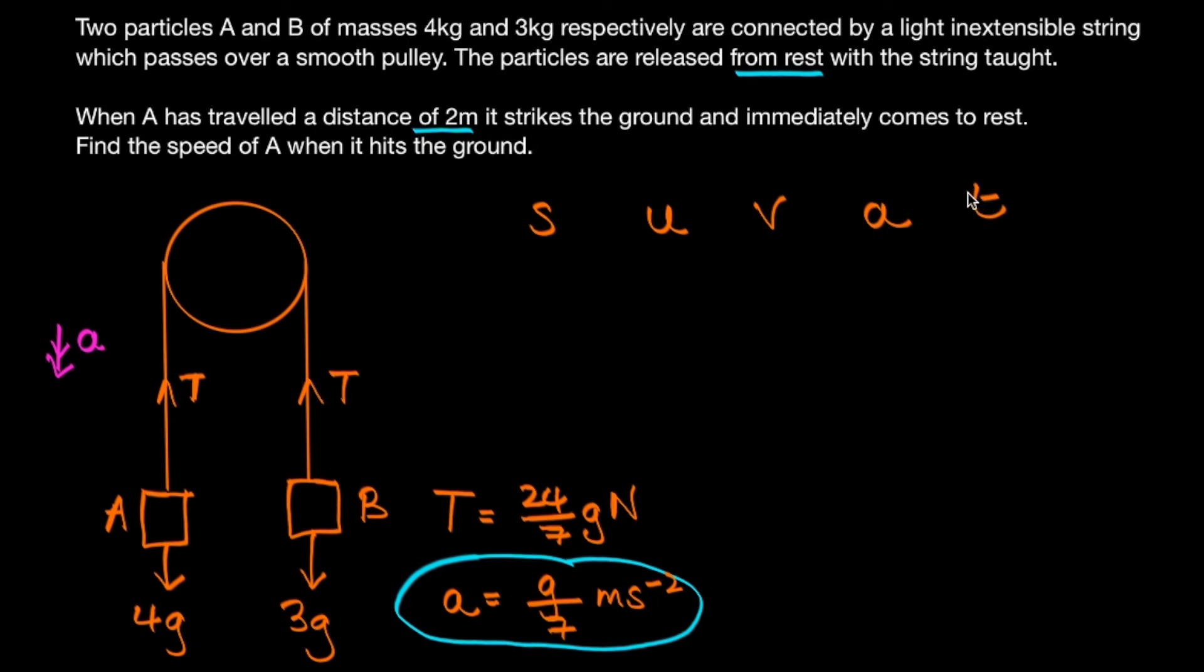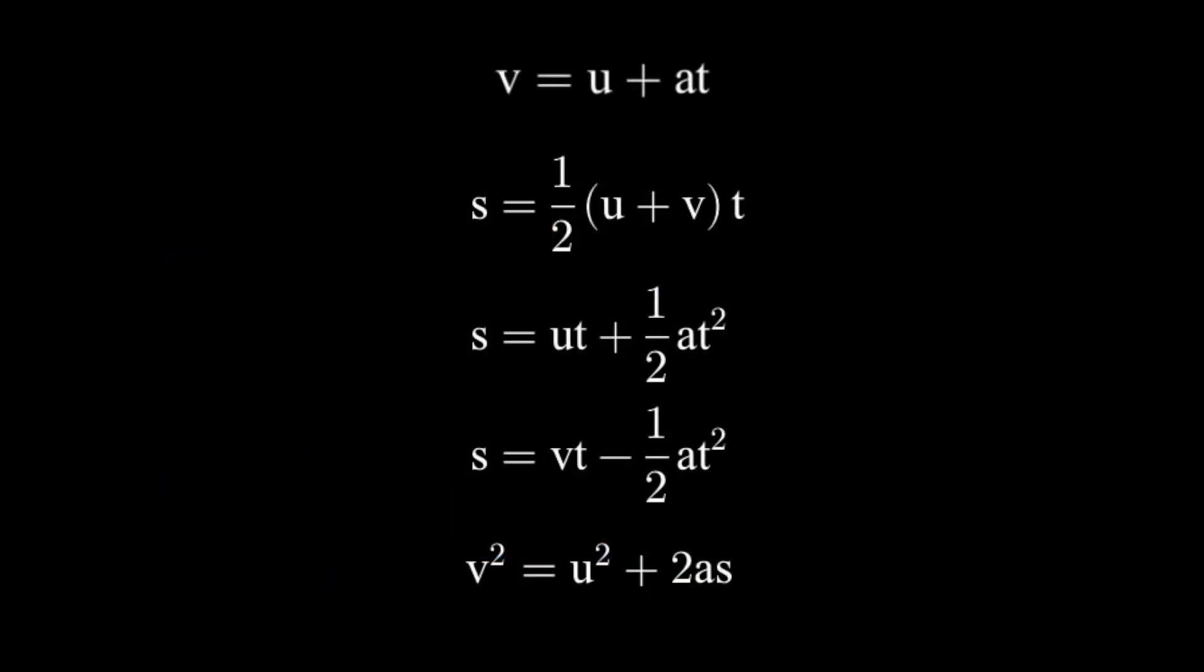So we've been told three pieces of information: a distance, an initial speed, and an acceleration. And we've been asked to find out the final speed of A, and we're not interested in how long it takes. And so which of the suvat equations omits the letter T?